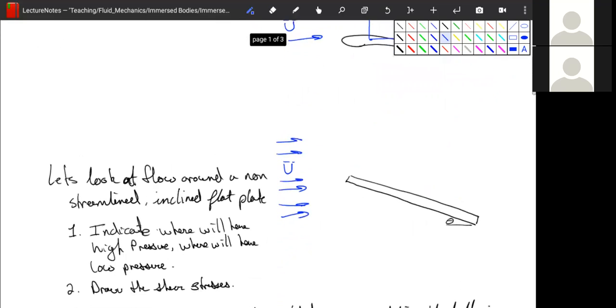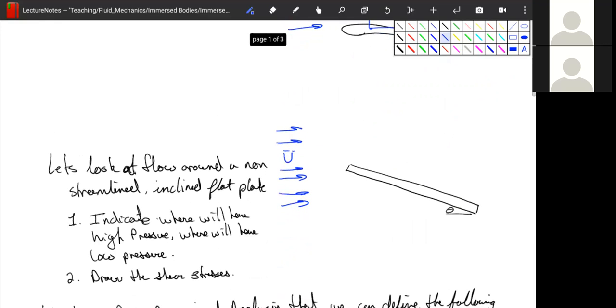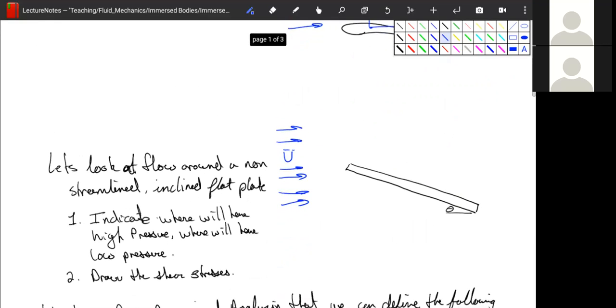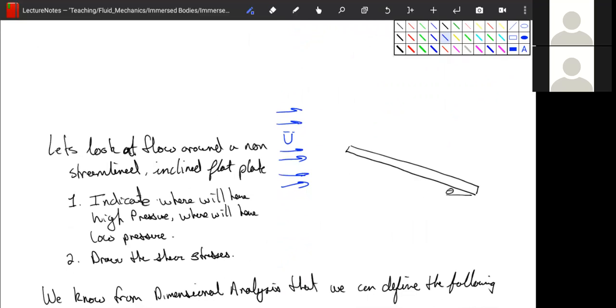If we have a non-streamlined inclined flat plate, for example, let's look at this. I want you guys to try to draw where you think roughly the pressure will be high, where you think the pressure will be low, and what the shear stresses will look like, in roughly what direction. We're not caring about magnitude or anything like that.